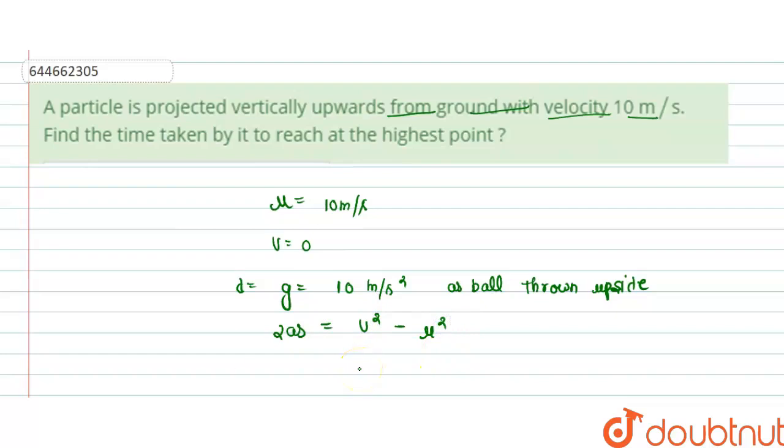We put all these values: 2 into 10. This 10 is minus 10 because thrown upside, so we put minus 10.